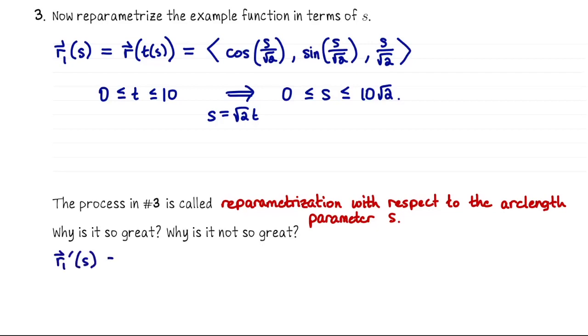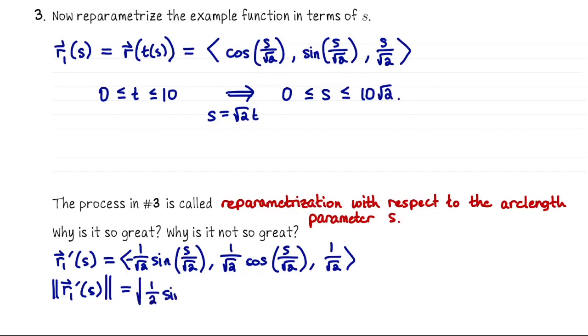So r1 prime, so differentiate with respect to s, and we get 1 over the square root of 2 times negative sine s over the square root of 2, 1 over the square root of 2 cosine s over the square root of 2, 1 over the square root of 2. Okay so that's our velocity vector. Now let's compute the speed. So we take the magnitude of that vector, and we get the square root of 1 half sine squared of s over the square root of 2, plus 1 half cosine squared of s over the square root of 2, plus 1 half. 1 half sine squared plus 1 half cosine squared is 1 half, so we have the square root of 1 half plus 1 half, which of course is the square root of 1, which is 1.